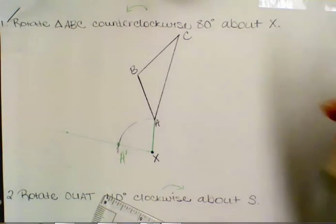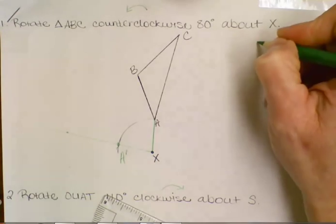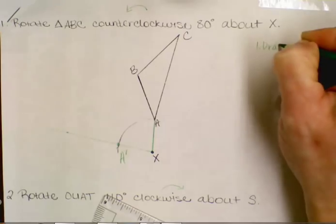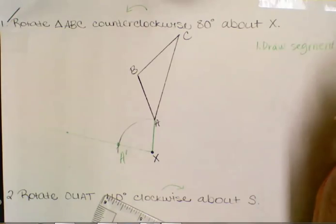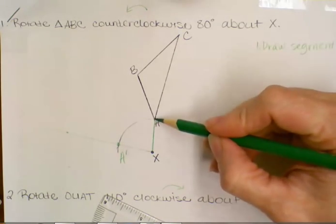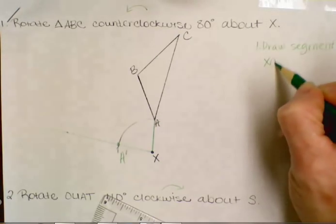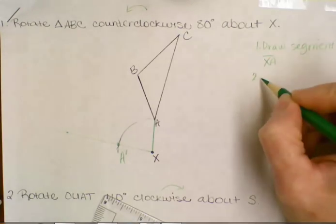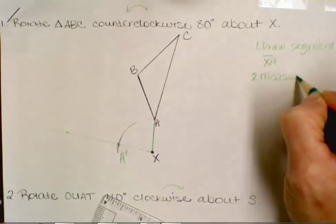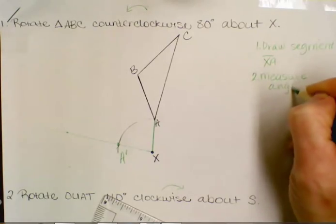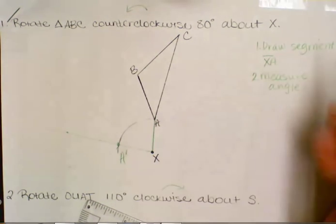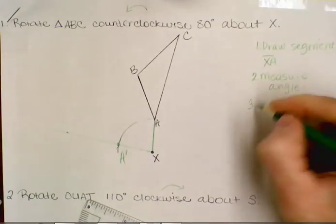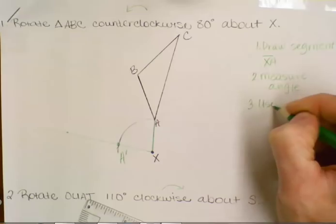So just for review, the first thing we did was we chose a point, and we drew a segment from X, our pivot place, to A, our point of rotation to the first point we're going to rotate. So we drew segment XA. Then we measure an angle. That's where we set this line in place. Remember to go counterclockwise on this one. And then lastly, use the compass to find point A prime.